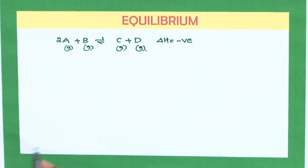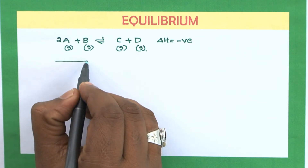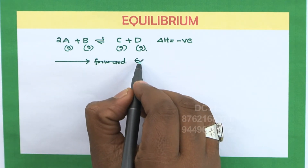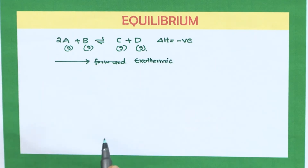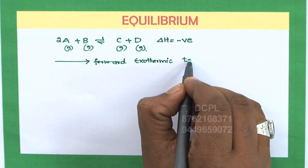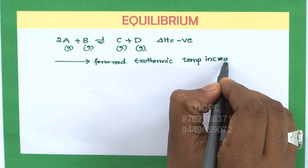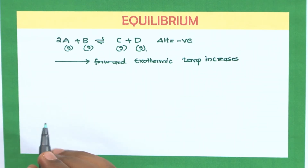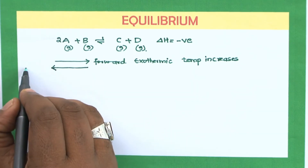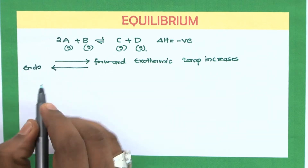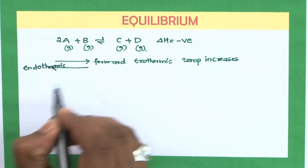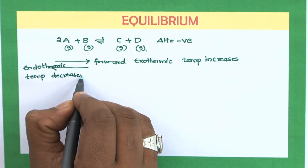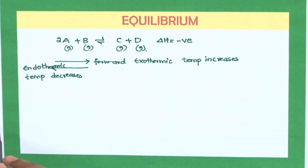Let us discuss the effect of temperature first. For the forward reaction, delta H is negative, meaning the forward reaction is exothermic — energy is released and the temperature of the system increases. Consequently, the backward reaction will be endothermic, meaning energy will be absorbed and the temperature of the system decreases.